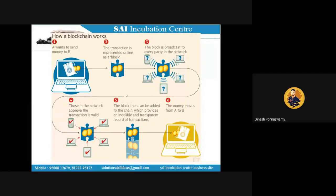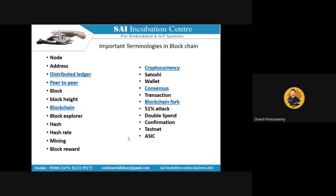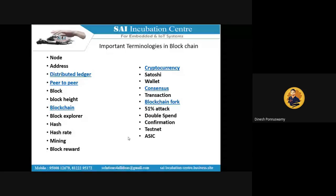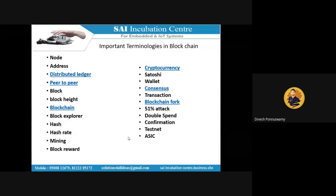There are important terminologies to understand. First is the node — in the distributed network, a node is any computer or device with computing capability, including mobile phones, laptops, or even microcontrollers like Raspberry Pi. Any device can be used for mining as long as it can compete in the validation race. The second terminology is the address.